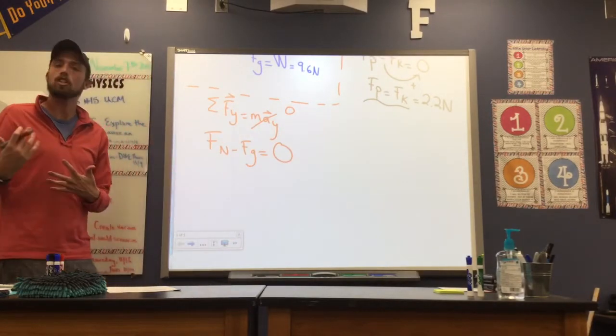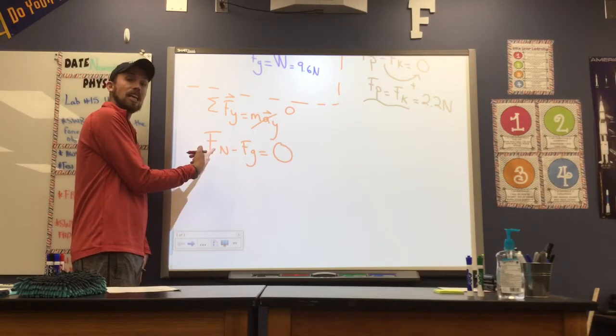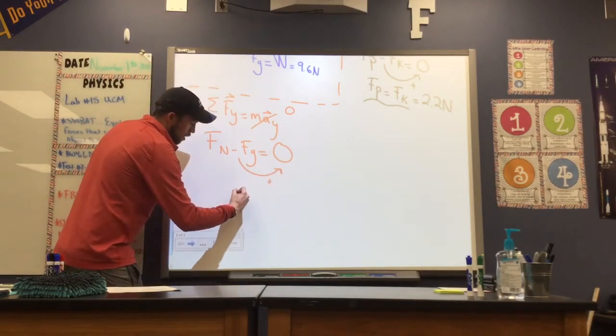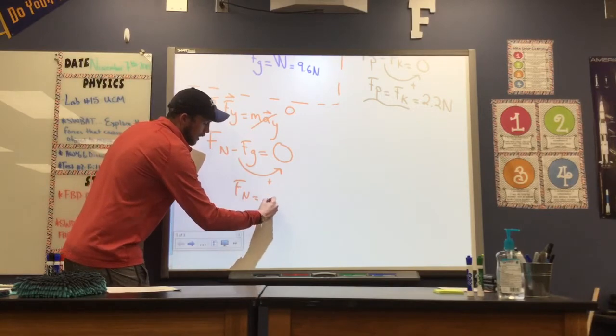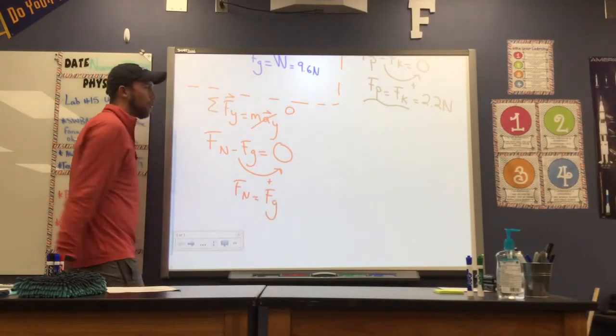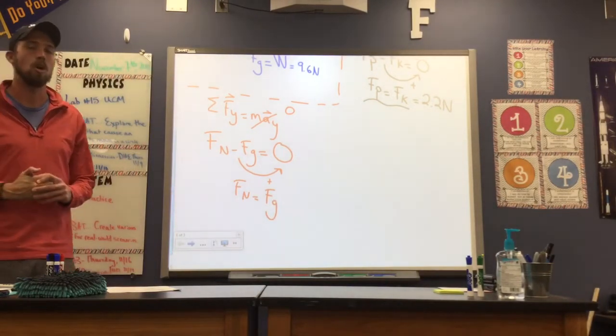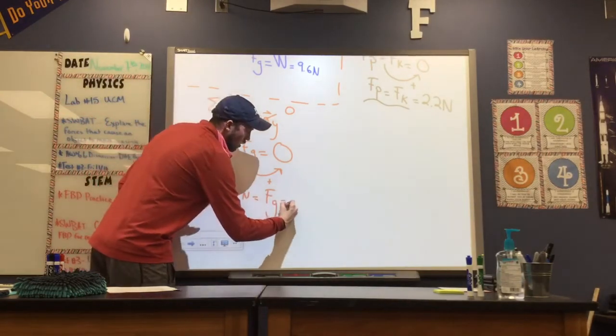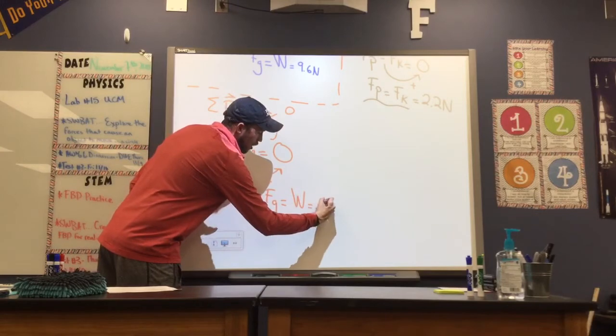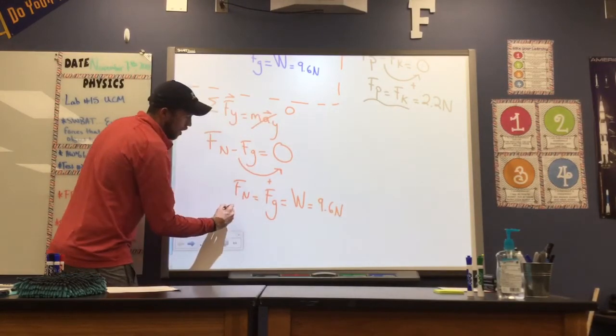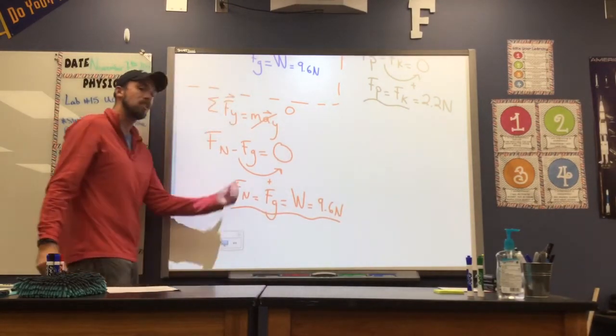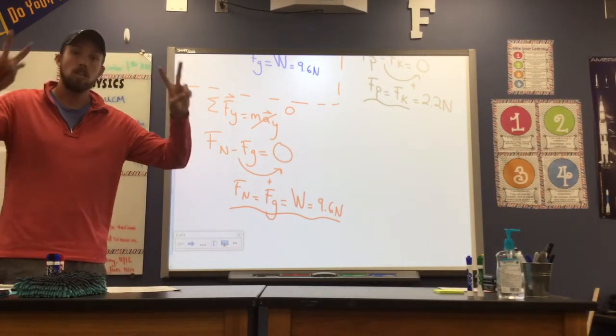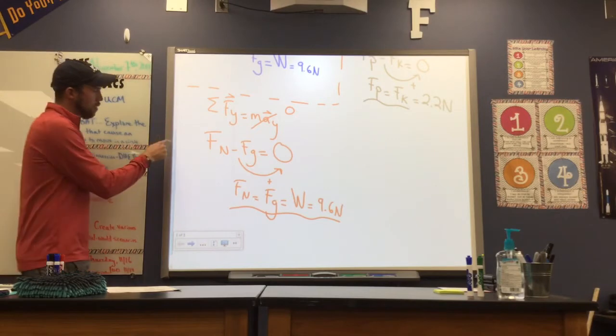So this value is going to go to zero. So Fn minus Fg is equal to zero. Very similar to what we did in the x-direction, I want to find Fn. So I'm going to move my force of gravity over. And we can come up with this relationship. Our normal force is equal to our force of gravity, or the weight, our problem mentioned. So this is equal to the weight, which we were told is 9.6 Newtons. All of those are equal. Our normal force is equal to our force of gravity, because of Newton's second law. That's equal to the weight, or the 9.6 Newtons.